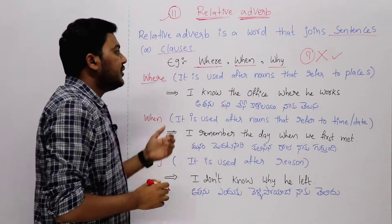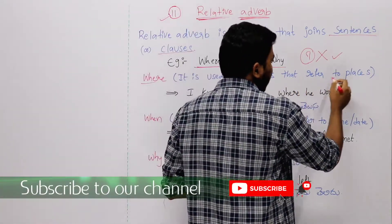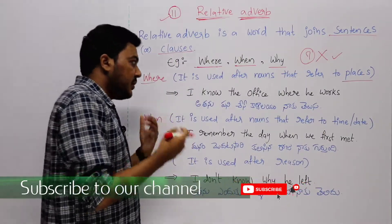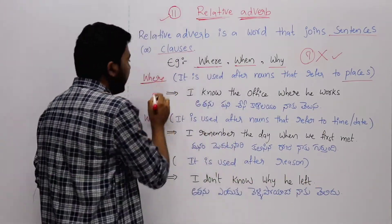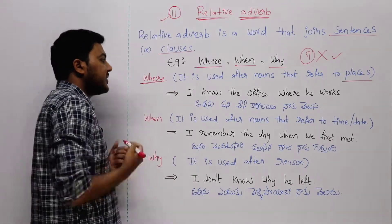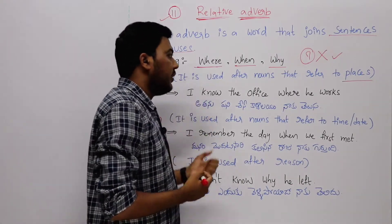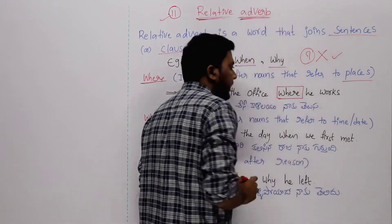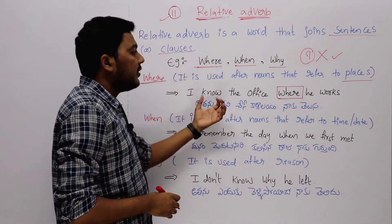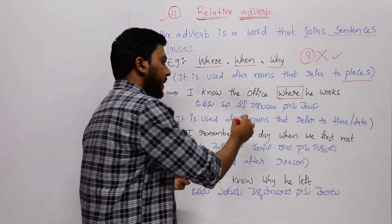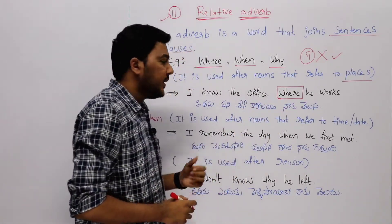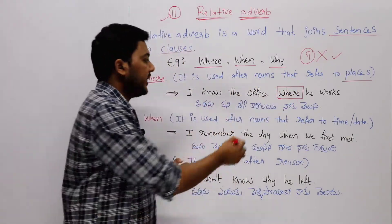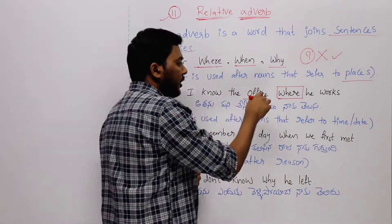So first of all, where. Where is used after nouns that refer to places. When we have nouns related to places, we use the relative adverb 'where'. Example sentence: I know the office where he works.